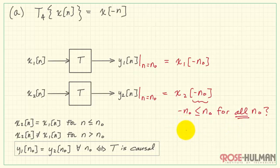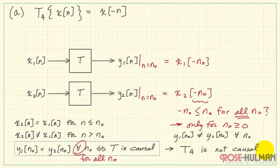Therefore, we conclude that the value of n0 that works is only when n0 is greater than or equal to 0. But since we need it to be true for all possible n0, then we conclude that y1 and y2 are not the same, and T4, therefore, is not causal.